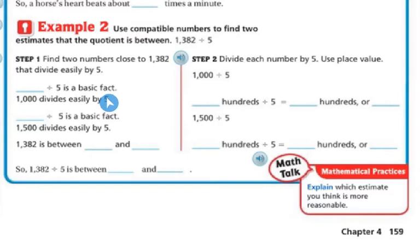So I know that 10 divided by 5 is a basic fact that easily divides into 5. I also know that 15 is a basic fact. So 1,500 divides easily by 5.